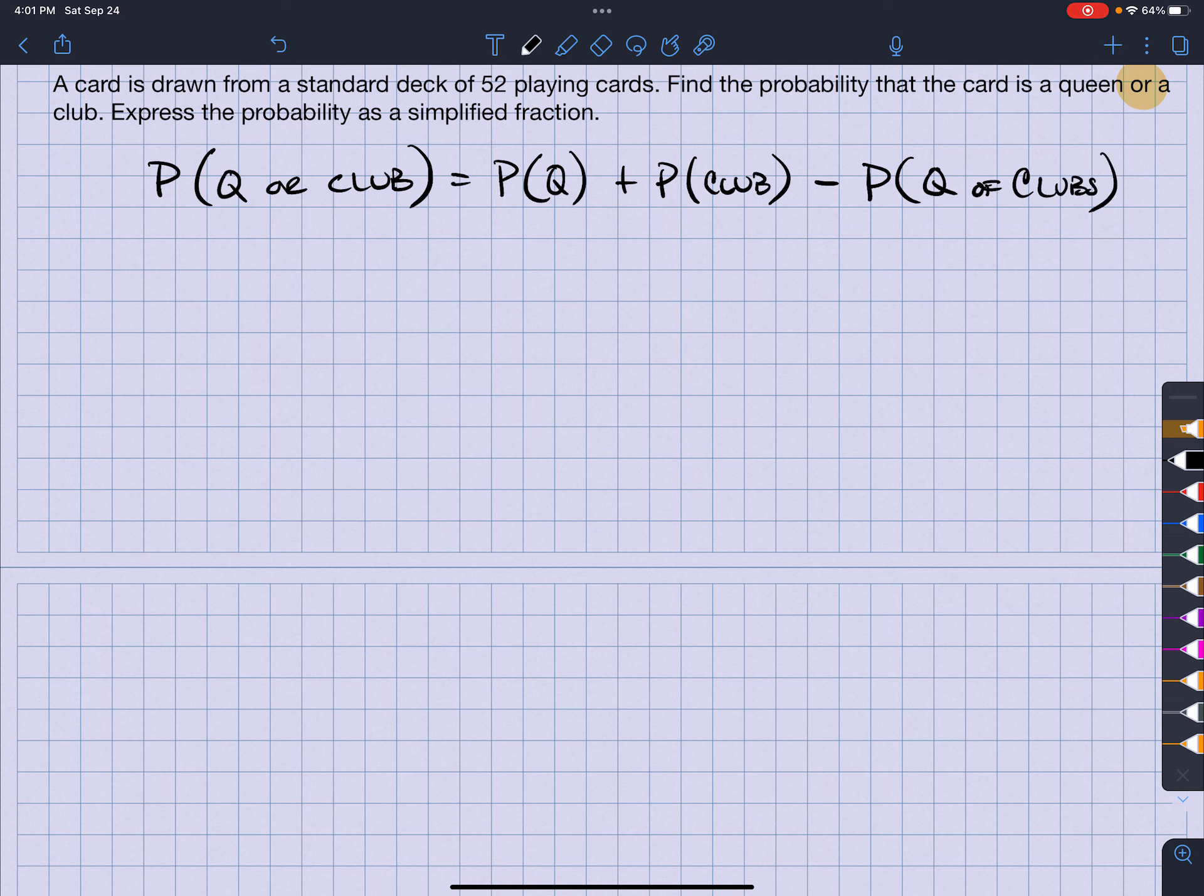Because that would be a queen and a club. So the probability of getting a queen - how many queens are in the deck? Well, there's a total of four queens out of the 52 cards.